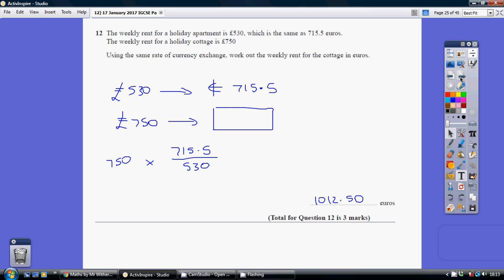Question 12, so you really just need to do this by way of proportion. Just gather your thoughts. £530 is the same as €715.5. We need to know what £750 is in euros.